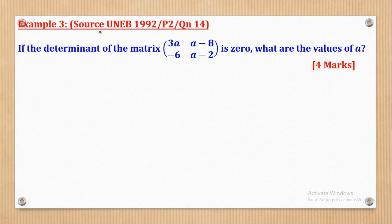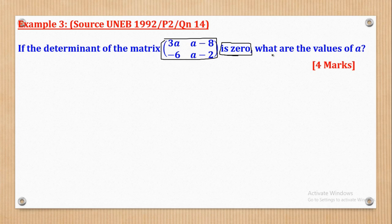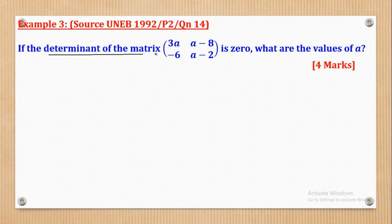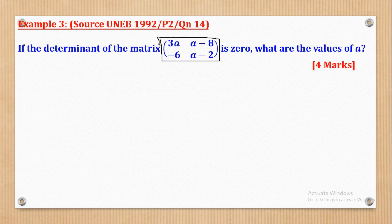Example 3 came from UNEB 1992 Paper 2 Question 14. It says: if the Determinant of the Matrix [3A, 8-A; -8, -6A-2] is 0 — we can see this is a Singular Matrix — find the values of A. Note that this question can be phrased as either 'the determinant is 0' or 'this is a singular matrix'; both mean the same thing.